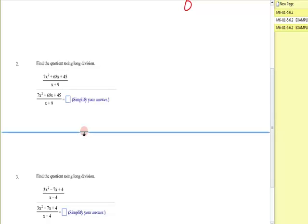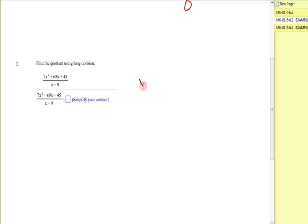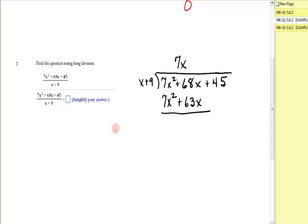All right, let's look at another one. Now, I have x plus 9 into 7x squared plus 68x plus 45. x goes into 7x squared. Well, let's see. Rephrase the question. What would you have to multiply x by to get 7x squared? You'd need to multiply it by 7x. 7x times x is 7x squared. 7x times 9 is 63x. And it's time to change, change.